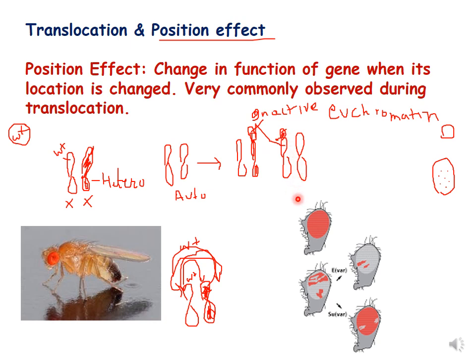When the euchromatin containing the W+ gene gets translocated to the heterochromatin part, it stops expressing itself. The red eye color is lost where the gene is inactive. This results in a variegation pattern — a mosaic of red and white patches. This is a classical example of position effect, where the gene has changed its position and consequently its function has also changed.